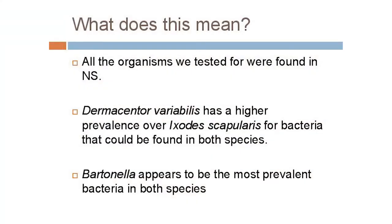So what does all this mean? All the organisms we tested for were found in Nova Scotia, but we didn't test for all possible pathogens — we had a very limited scope. Dermocenter variablis had higher prevalences than Exotus scapularis, yet we're still chiefly concerned with Exotus. I'm not saying we shouldn't be concerned with Exotus — it transmits Lyme disease, which is very dangerous — but we should also include other pathogens in our concern. Bartonella appeared most prevalent; however, further research should validate these claims and check for false positives.